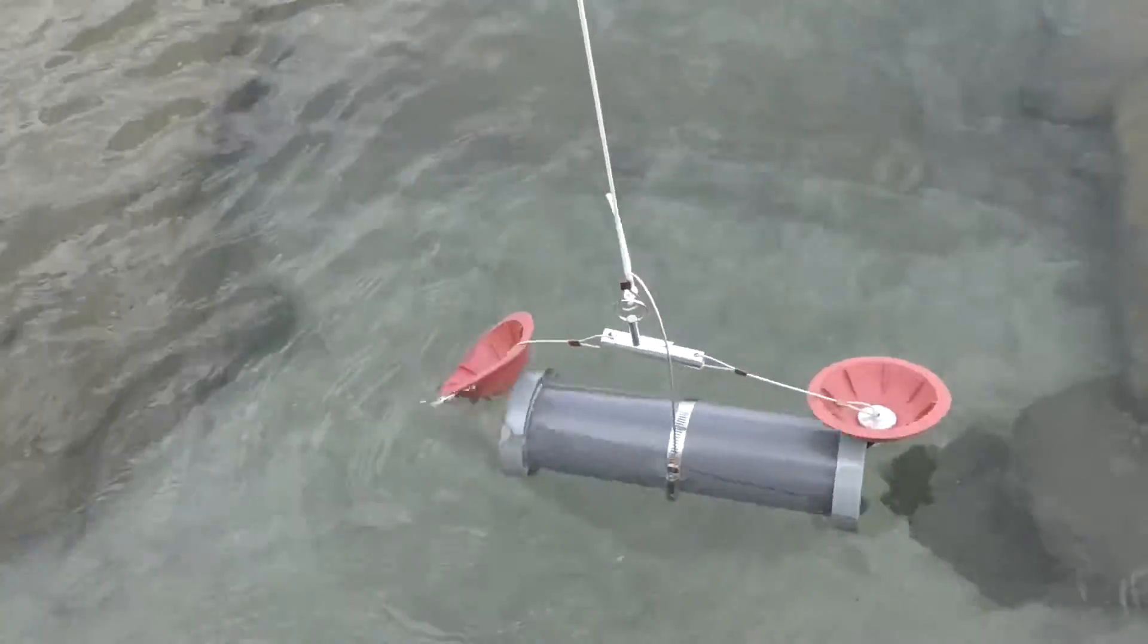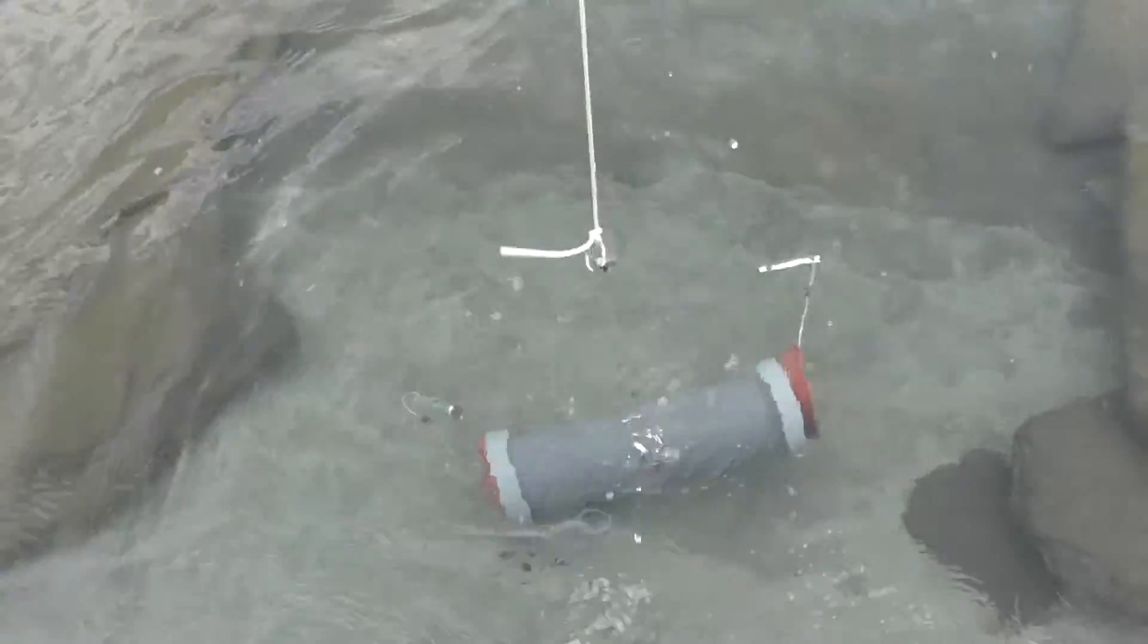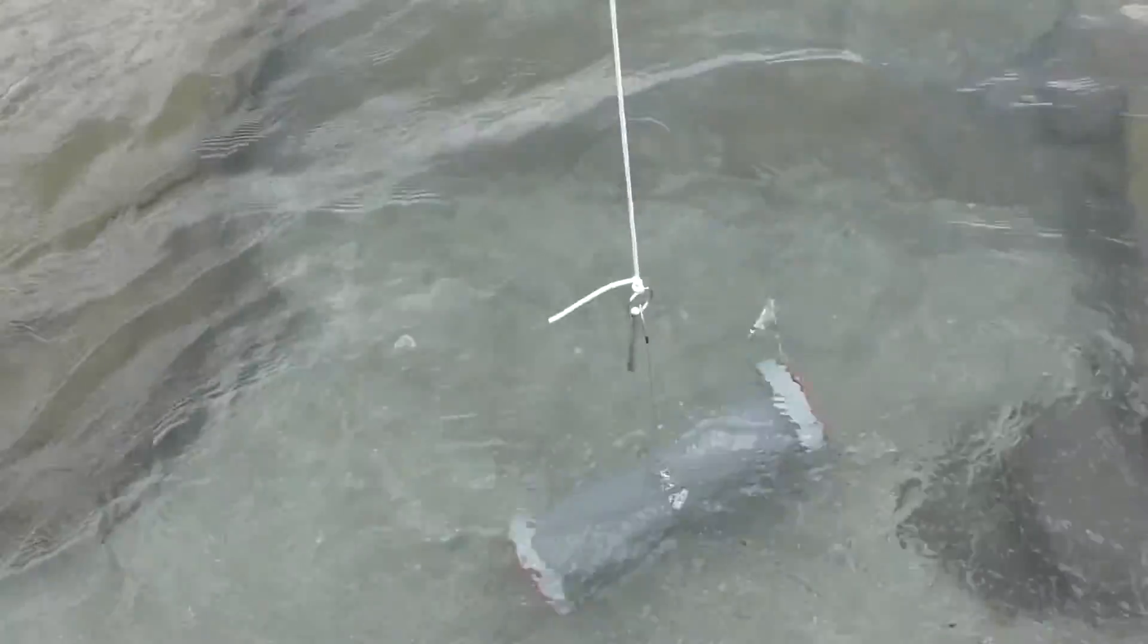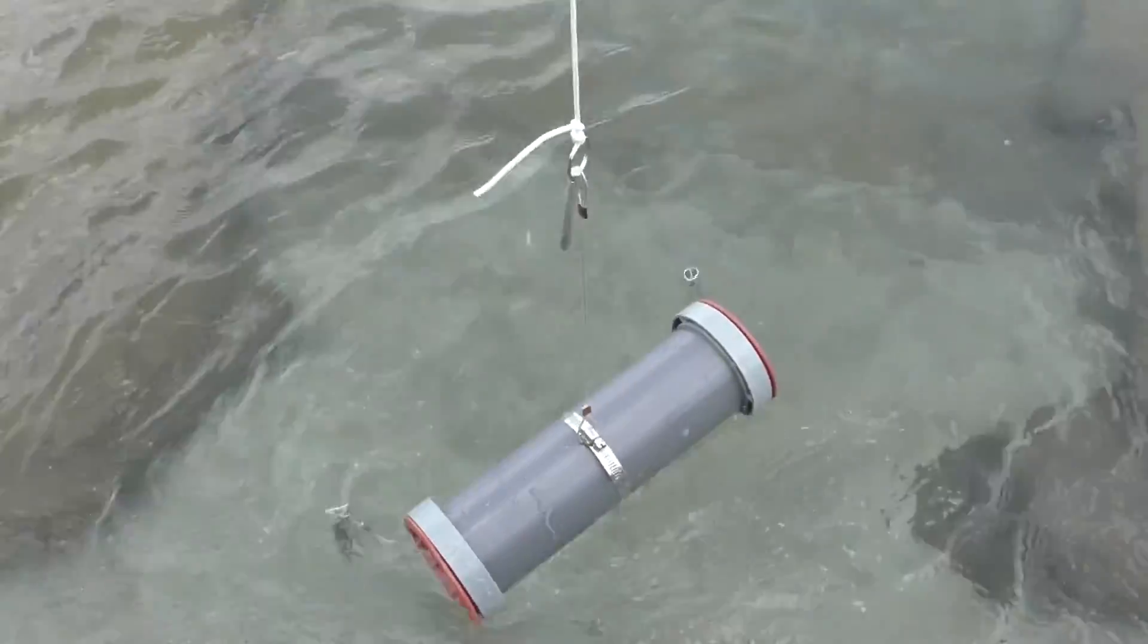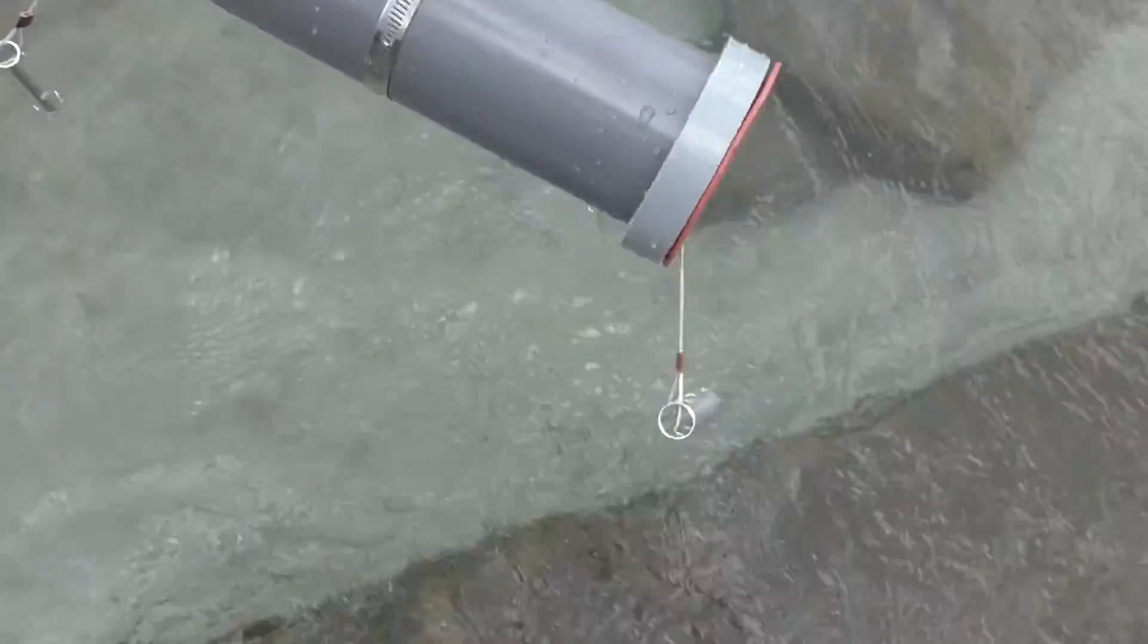Then you slowly lower this into the water to your desired depth. Give a quick tug on the rope. The internal bungee cords pull the plungers in, holding the water securely, and as you can see it doesn't leak.